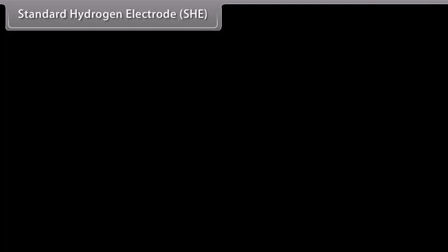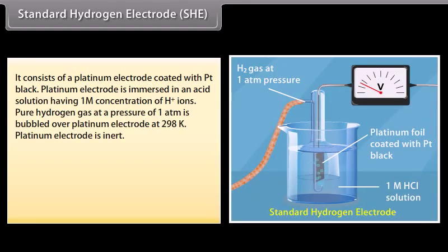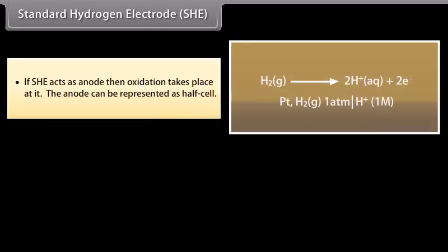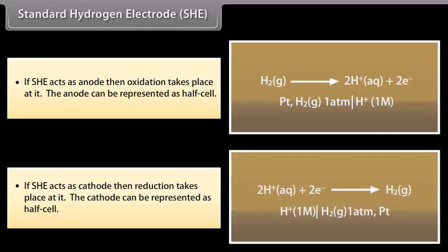Standard hydrogen electrode (SHE): It consists of a platinum electrode with platinum black, immersed in an acid solution having 1M concentration of hydrogen ion. Pure hydrogen gas at a pressure of one atm is bubbled over the platinum electrode at 298 K. The platinum electrode is inert; the half reaction takes place at its surface. The hydrogen electrode can act as anode or cathode depending upon the nature of the second electrode with which it is combined. If SHE acts as anode, oxidation takes place at it; if SHE acts as cathode, reduction takes place at it. The electrode potential of the standard hydrogen electrode is taken as zero.